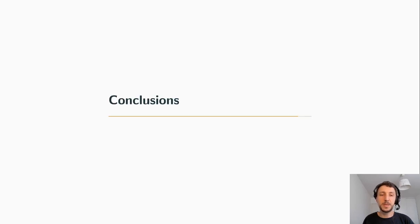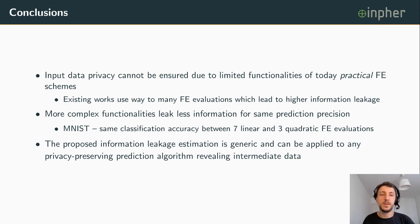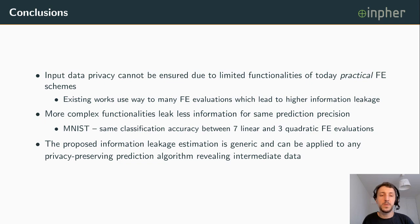In conclusion, input data privacy cannot be ensured in functional encryption-based classifiers due to the limited functionalities of today's practical functional encryption schemes. Existing works use too many functional encryption evaluations, leading to high information leakage. We have empirically proven that more complex functionalities leak less information for the same prediction precision — for example, on MNIST, the same accuracy is achieved with either seven linear or three quadratic functional encryption evaluations. Finally, the proposed information leakage estimation framework is generic and can be applied to any privacy-preserving prediction algorithm that reveals intermediate data.